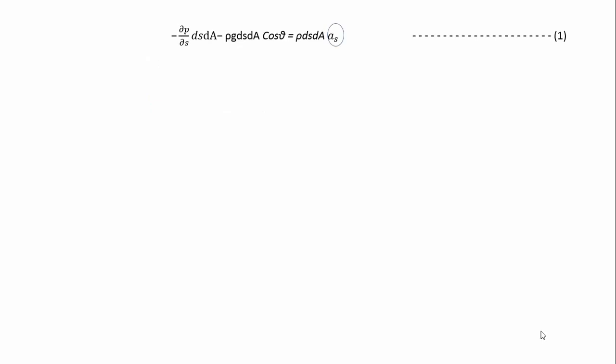Here, as is the acceleration, which is the rate of change of velocity. As the velocity here is a function of space as well as time, by chain rule it can be written as follows.